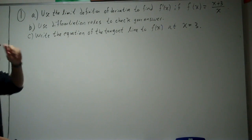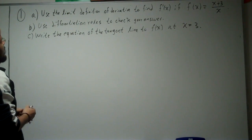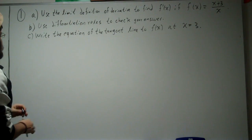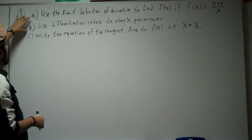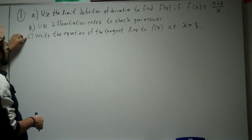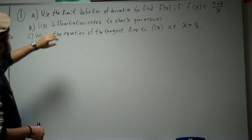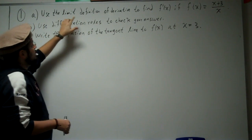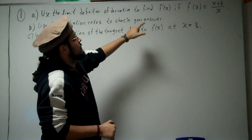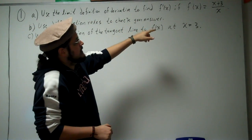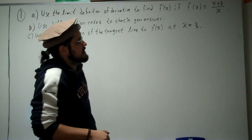We're going to start with problem one of the second section of the exam. The first problem has three components: A, B, and C. We'll start with A. Part A says: use the limit definition of derivative to find f prime of x if f of x equals x plus 3 divided by x.